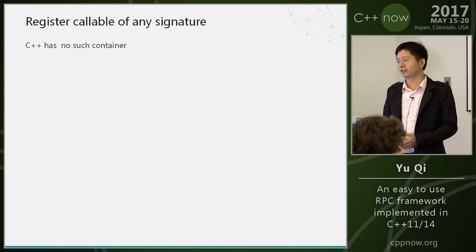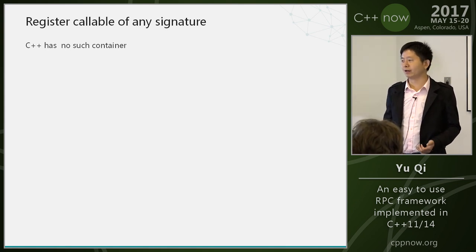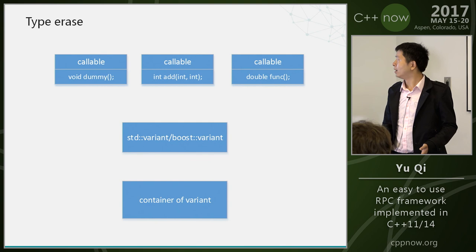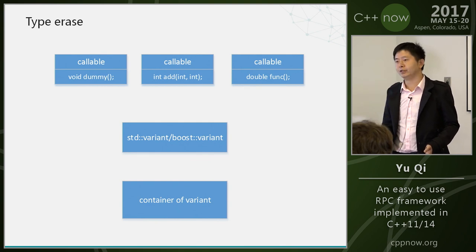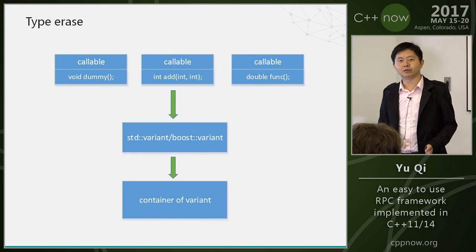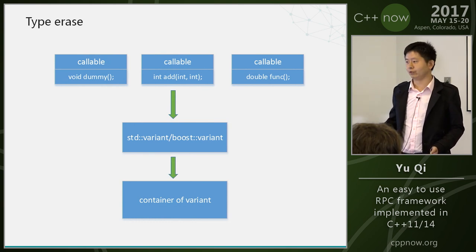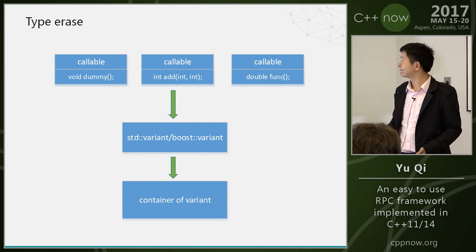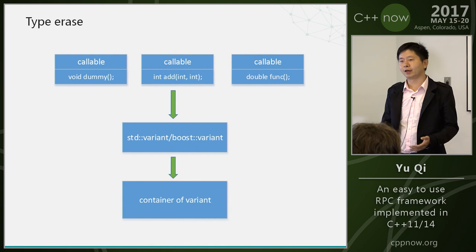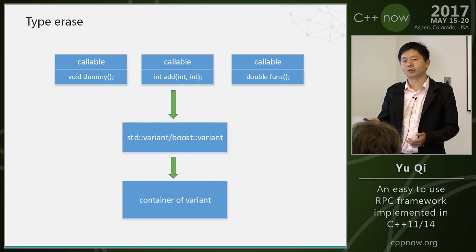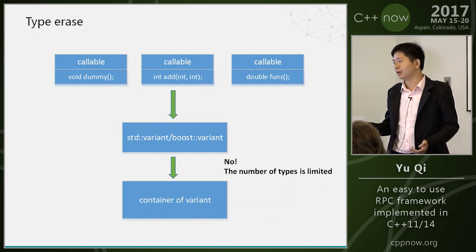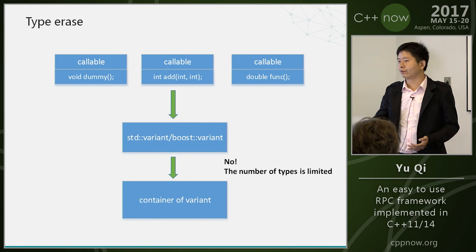Maybe someone thinks that std::any or std::variant can solve the problem. Let's look at std::variant. The standard variant is from C++17, and you can also use boost::variant. Variant can hold different kinds of types, and you can put the variant in your container. But variant can't add new types after it is defined, so this approach is not right.